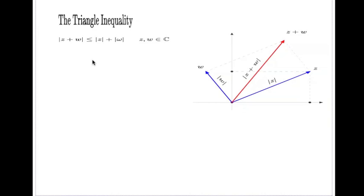You've probably heard this in the context of pure geometry with no vectors: the length of one side of a triangle never exceeds the combined length of the other two sides. That's the reason we call this the triangle inequality.